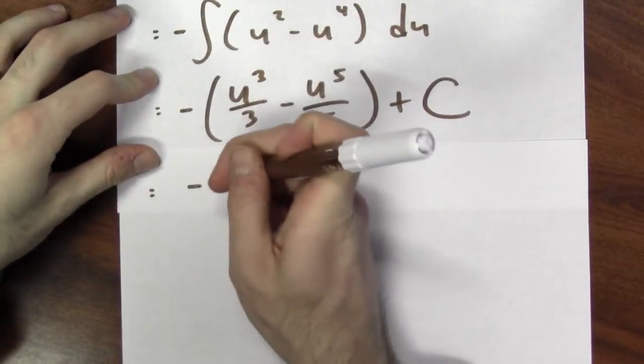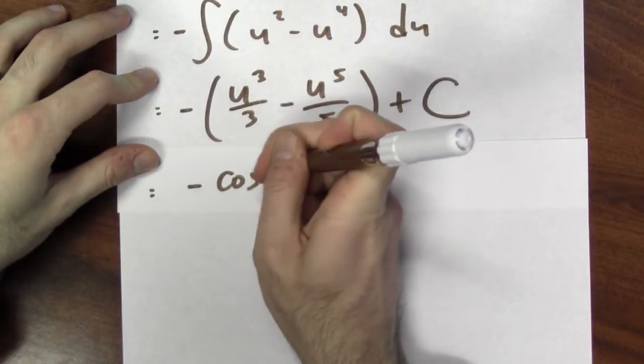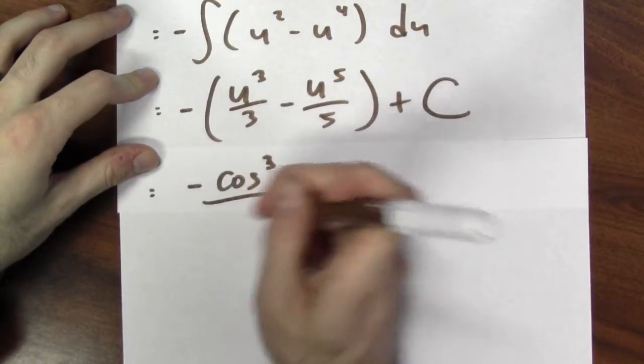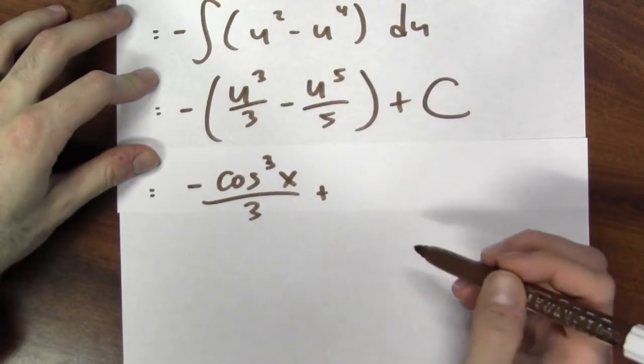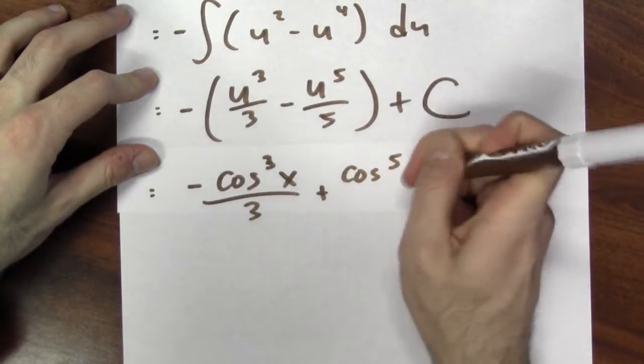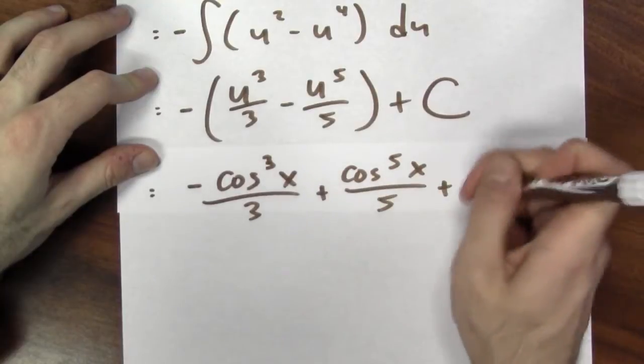So this is minus, anti-derivative of u squared is u cubed over 3, and an anti-derivative of u to the 4th is u to the 5th over 5 plus c. Now I'll substitute cosine x for u. And we get negative cosine cubed of x over 3 plus cosine to the 5th x over 5 plus c. And this same kind of trick works in other cases too.